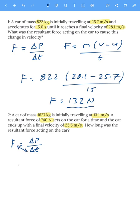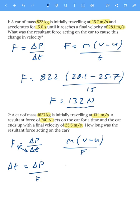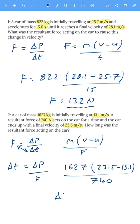We can swap them around — what I call a sneaky swap. The change in time equals the change in momentum divided by force, and the change in momentum is mass multiplied by the change in velocity divided by force. Putting in the numbers: 1627 multiplied by 23.5 minus 13.1, divided by 740, gives a change in time of 22.86 seconds, which we round to 23 seconds.